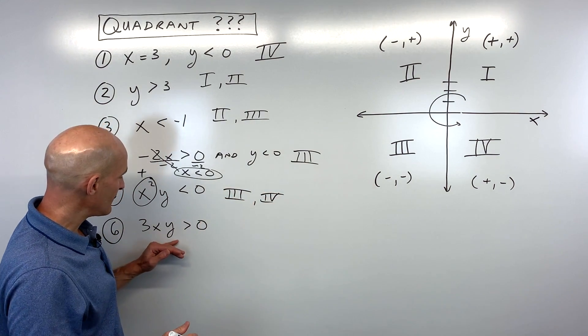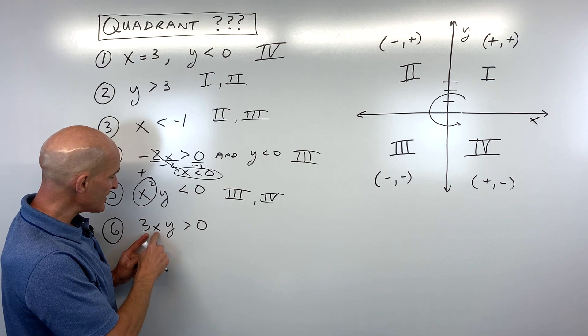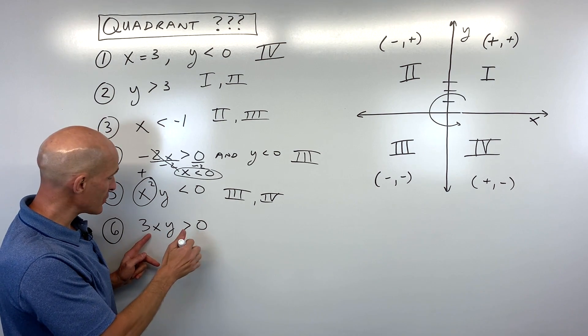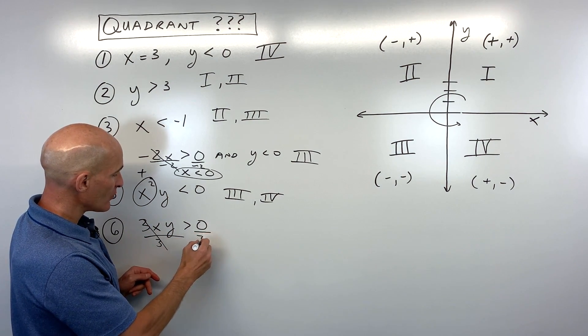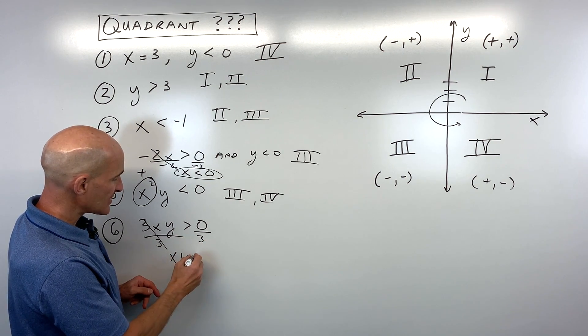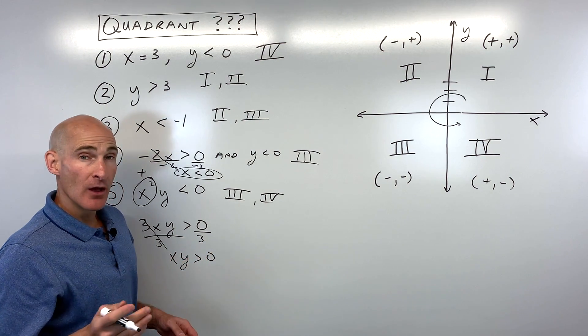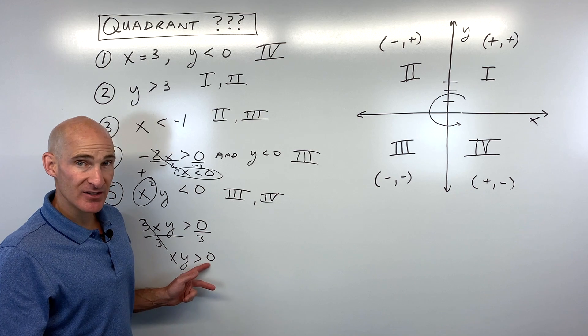And then the last one, see if you can do this one. Three times x times y is greater than zero. Let's just go ahead and divide by three to get the variables by themselves here. So x times y is greater than zero. Well, remember, greater than zero just means positive, right?